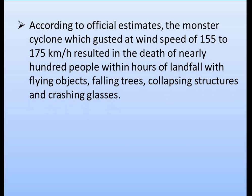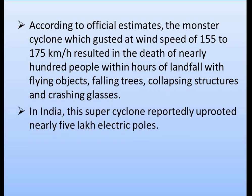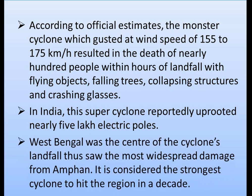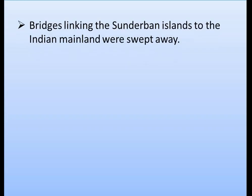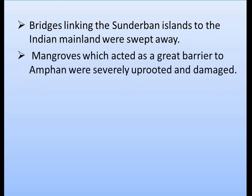According to official estimates, the super cyclone Amphan, which gusted at wind speeds of 155 to 175 kilometers per hour, resulted in the death of nearly 100 people within hours of landfall — from flying objects, falling trees, collapsing structures, and crashing glass. The cyclone reportedly uprooted nearly 5 lakh electric poles in India. West Bengal, being the center of landfall, saw the most widespread damage. It is considered the strongest cyclone to hit the region in a decade. Bridges linking the Sundarbans islands to the Indian mainland were swept away, and mangrove groups which acted as a barrier were severely damaged.